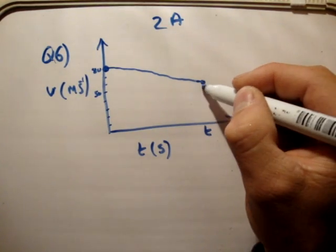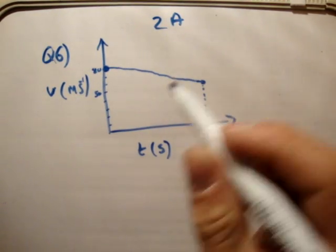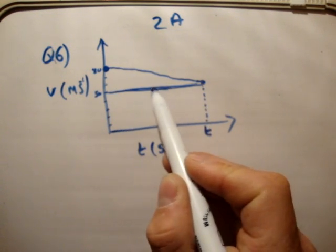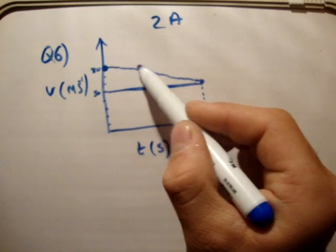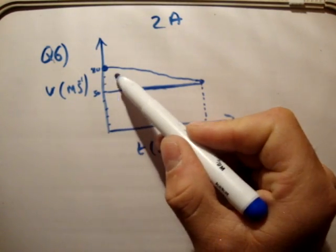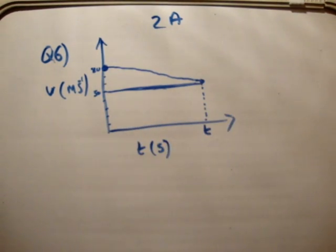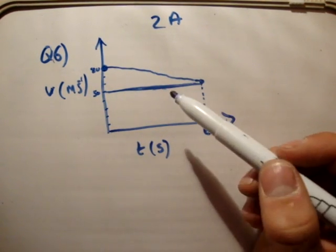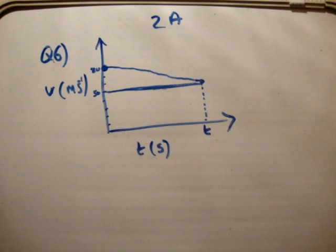Now let's just have a quick look at this. We know, for example, that the area under this curve, which is this line here, which is the triangle and the rectangle, will give us the total distance. Now it doesn't seem that we have enough information to do that because we don't have what t is equal to, because we need half the base by the perpendicular height for the triangle.